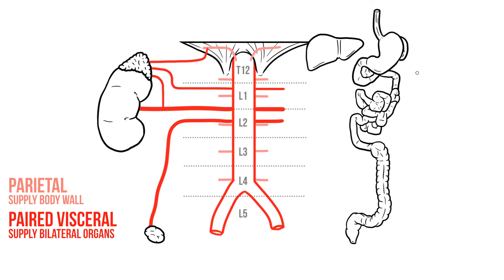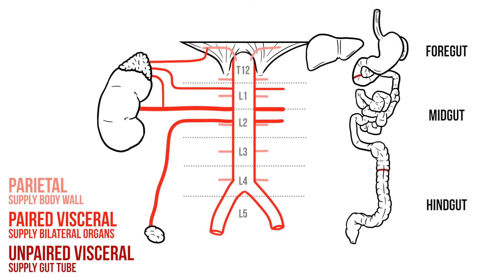The final group consists of three unpaired arteries that supply the gut tube. Now embryologically the gut tube is split into three sections: the foregut, midgut, and hindgut. Each of these regions is primarily supplied by a single branch of the aorta.